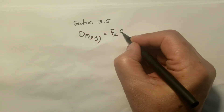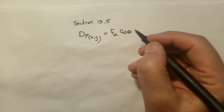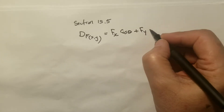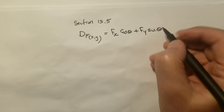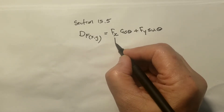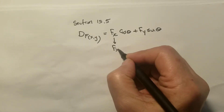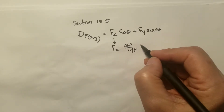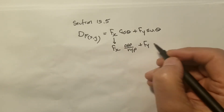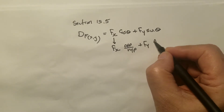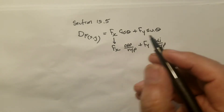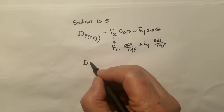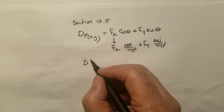...plus the partial derivative with respect to y times sine theta. Sometimes they replace cosine theta by adjacent over hypotenuse, and sine theta by opposite over hypotenuse. The directional derivative will always be evaluated at a specific point.